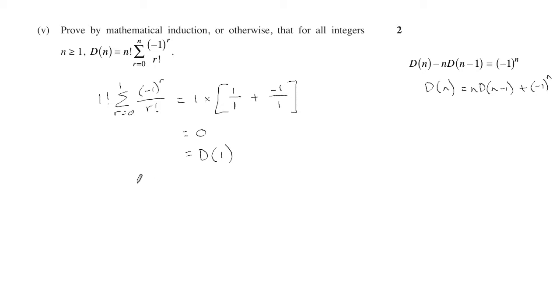Okay, so now we want to assume that it's true for n equals k. So if d(k) equals k factorial sum from r equals 0 to k of negative 1 to the r over r factorial, then we want to show that it's true for k plus 1.